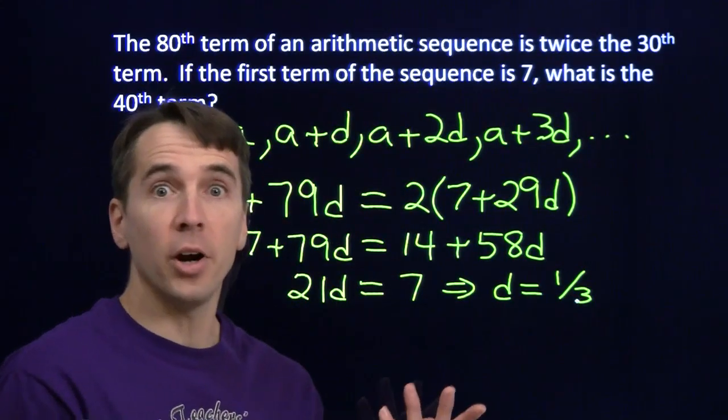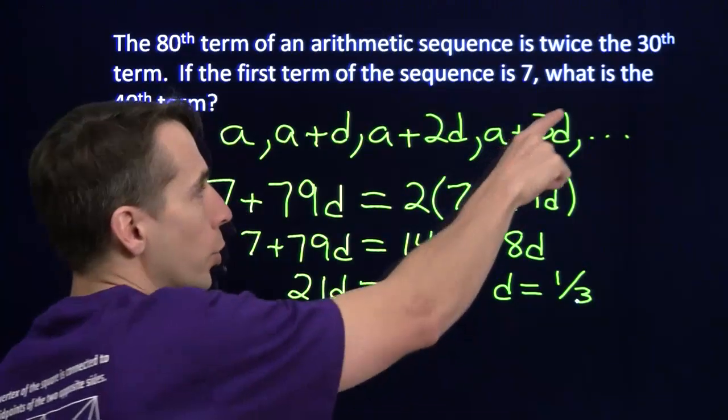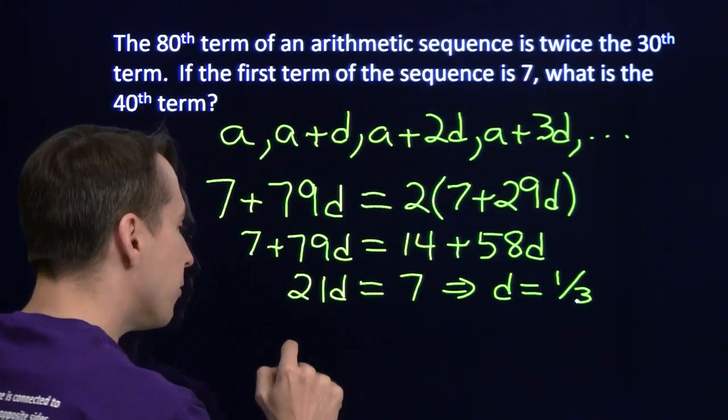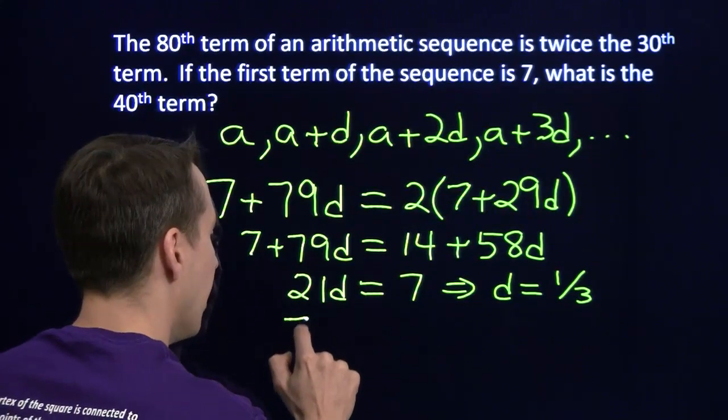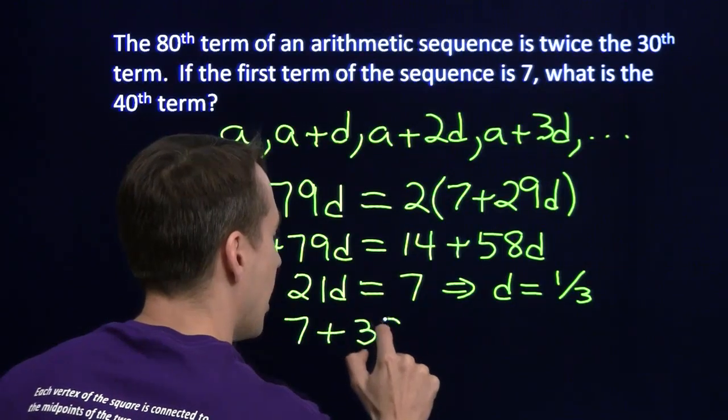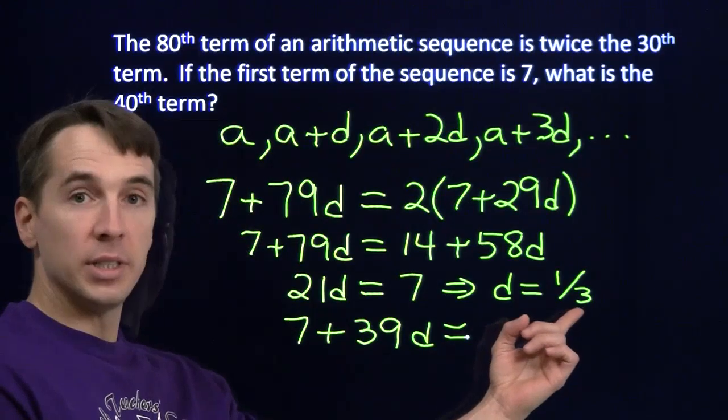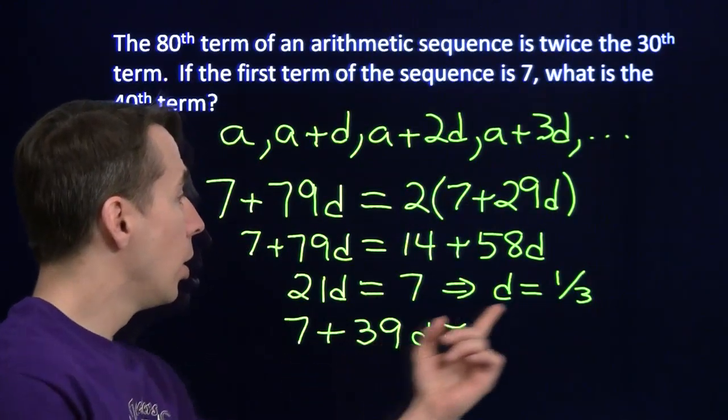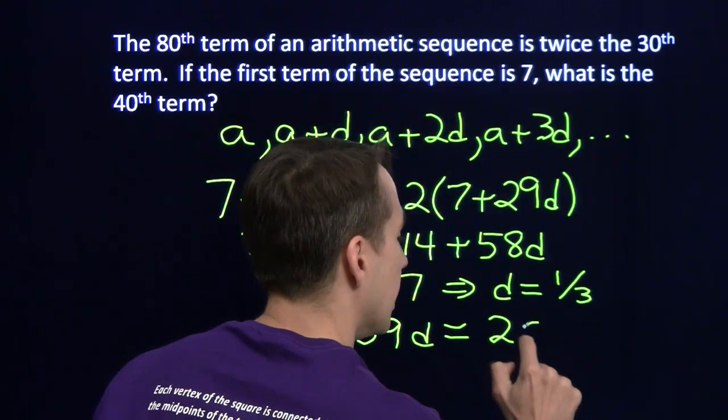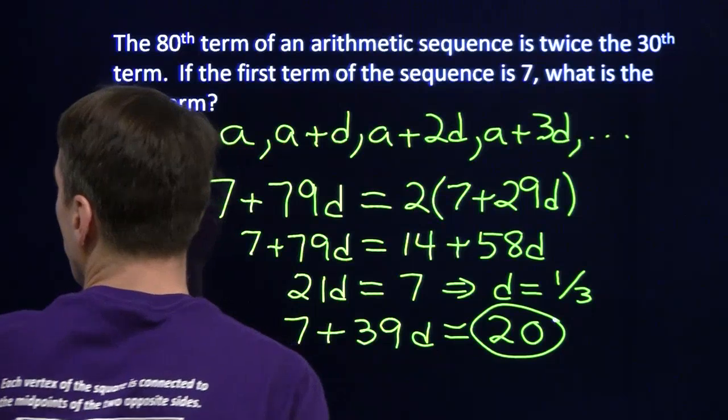Now, if we just write down 1 third, we'll get the problem wrong. Last step, read the question. What is the 40th term? Now that we have D, we can figure that out. The first term is 7. And to get out to the 40th term, we take 39 steps of length D. And now that we know that D is 1 third, we can just put that in here. 1 third of 39 is 13. 7 plus 13 is 20. And now we have the right answer to the problem, and we're ready for the next one.